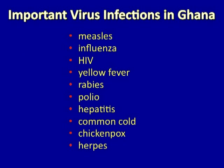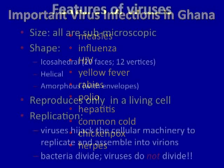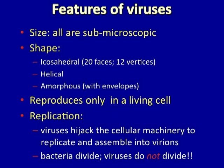Many viruses are common in Ghana and should be well known to you by name. Here is a list of some of them, and I'll refer to them later in this talk. Viruses have several distinct features that distinguish them from other pathogens. They are all submicroscopic — none of them can be seen with a light microscope because of their size. Their shapes can be quite variable; however, there are some common themes that I will talk about in the next few slides.